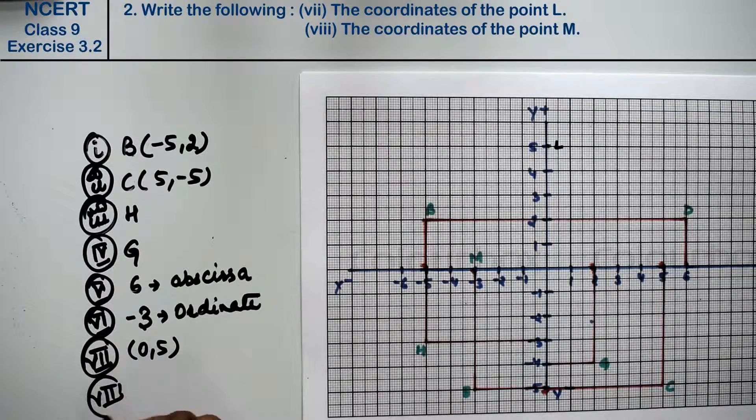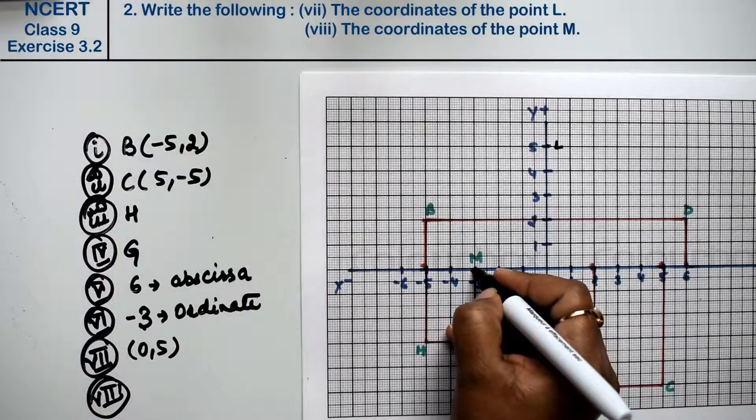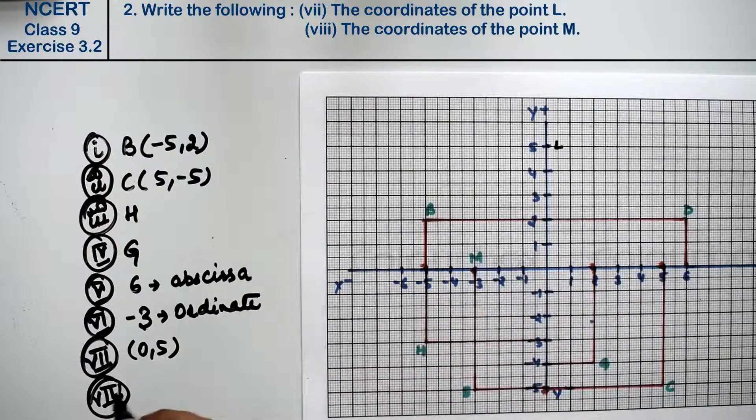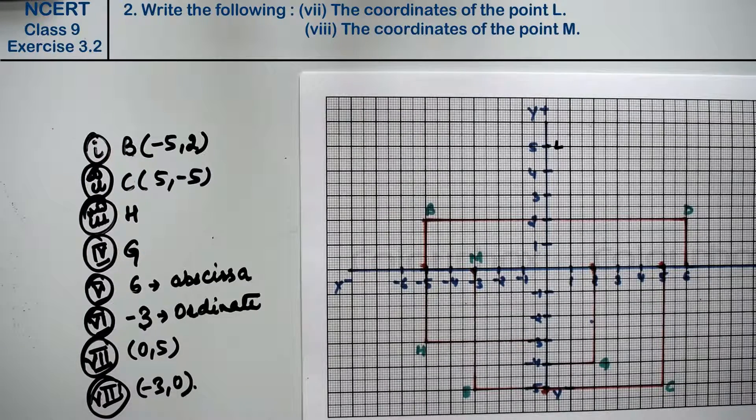Let's do eighth part. Eighth part is the coordinates of the point M. So M is here. What is the point? x is minus 3 and y is 0. Minus 3 and 0 is the answer.